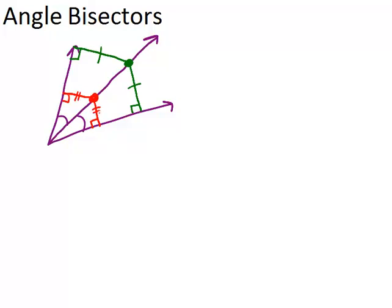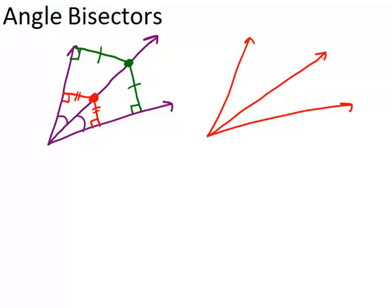The converse of this property is also true. So if you have an angle, and you have a line that you don't necessarily know is the angle bisector, but you do know that there's a point on the line that is equidistant from the two parts of the angle,